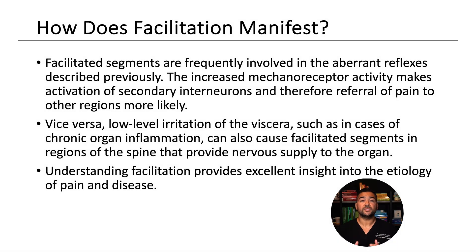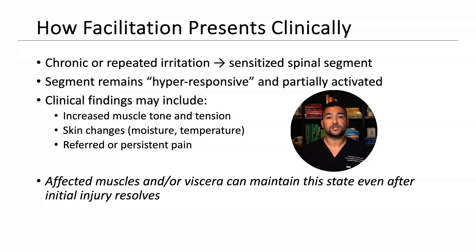Facilitated segments are often associated with aberrant reflexes. Increased mechanoreceptor activity makes referred pain more likely at locations innervated by the same spinal levels. Similarly, chronic low-level visceral irritation can create facilitated segments at the regions of the spine that provide sympathetic and/or parasympathetic nerve supply to the affected organ. Clinically, facilitation presents as increased muscle tone, skin changes in temperature and moisture, and segmental tenderness — findings that persist even after the original injury resolves, making them valuable diagnostic clues.